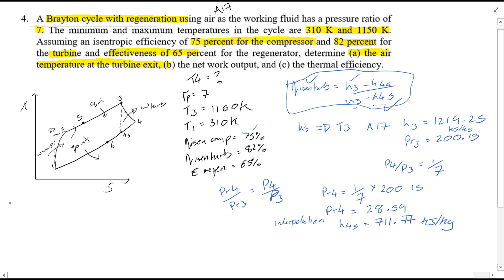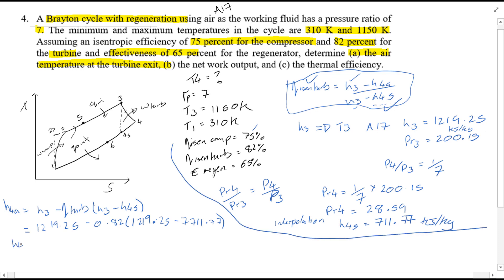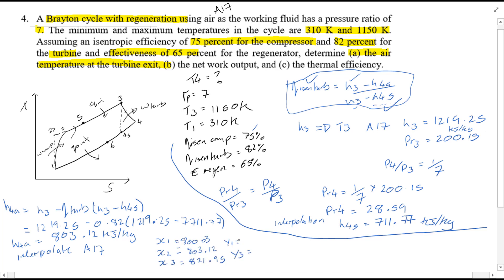Rearranging that equation gives a value of H4A equal to 803.12 kJ/kg. Now interpolate this using table A17 — interpolation has been covered in previous videos; example sheet 2, question 1 goes through interpolation if you need to refresh. You will find that T4A is equal to 782.82 K.